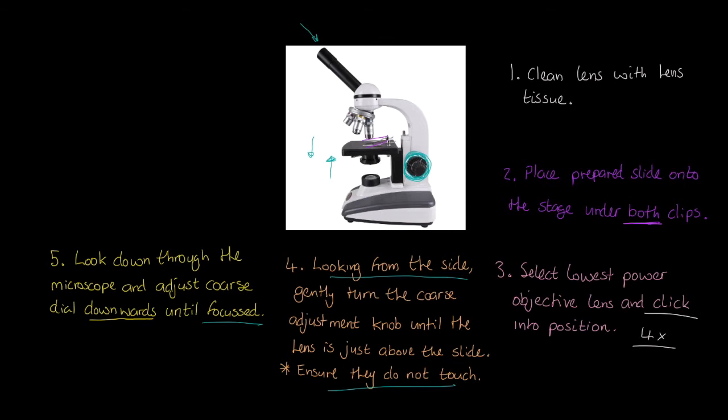Next, we're now going to start using the fine adjustment knob. What we're going to do is we're just going to tweak and play with that until we get the best image, the sharpest image that we can find. If need be, we're going to recenter the prepared slide or adjust it so it's in the correct position to get that best image.